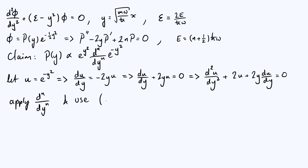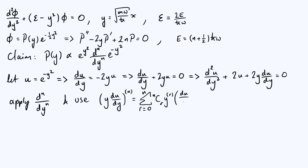Leibniz's theorem says that if we want to take y du by dy and differentiate that n times, we can express that as a sum from r equals 0 up to n: a binomial coefficient n-choose-r, the r-th derivative of y, and the (n minus r)-th derivative of du by dy. For the r equals 0 term: n-choose-0 is 1, the zeroth derivative of y is just y, and the nth derivative of du by dy can be written as d by dy of d^n u by dy^n. For the r equals 1 term: n-choose-1 equals n, the first derivative of y is just 1, and then you get the (n minus 1)-th derivative of du by dy, which is the nth derivative of u. All remaining terms are zero because differentiating y more than once gives zero.